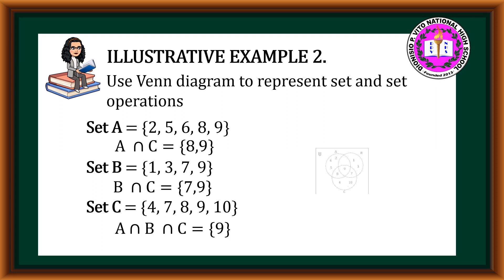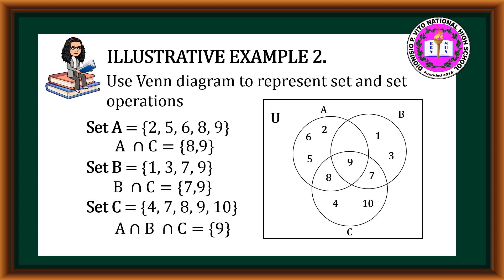Therefore, we have this Venn Diagram. Set A is equal to 2, 5, 6, 8, and 9, with the intersection of Set A and Set C equal to 8 and 9. Set B is equal to 1, 3, 7, and 9, with the intersection of Set B and Set C equal to 7 and 9. Set C is equal to 4, 7, 8, 9, and 10. And the intersection of Set A, B, and C is equal to 9.